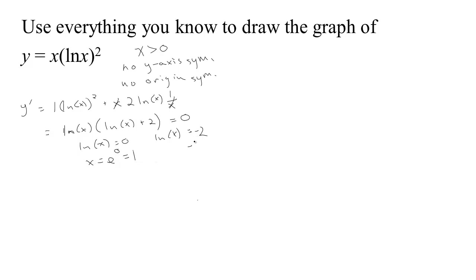This one says negative 2 is the exponent you put on e to get x, so x is e to the negative 2 or if you like 1 over e squared. So these are our two critical points, places where y prime is zero so they're going to give us level spots in the graph.